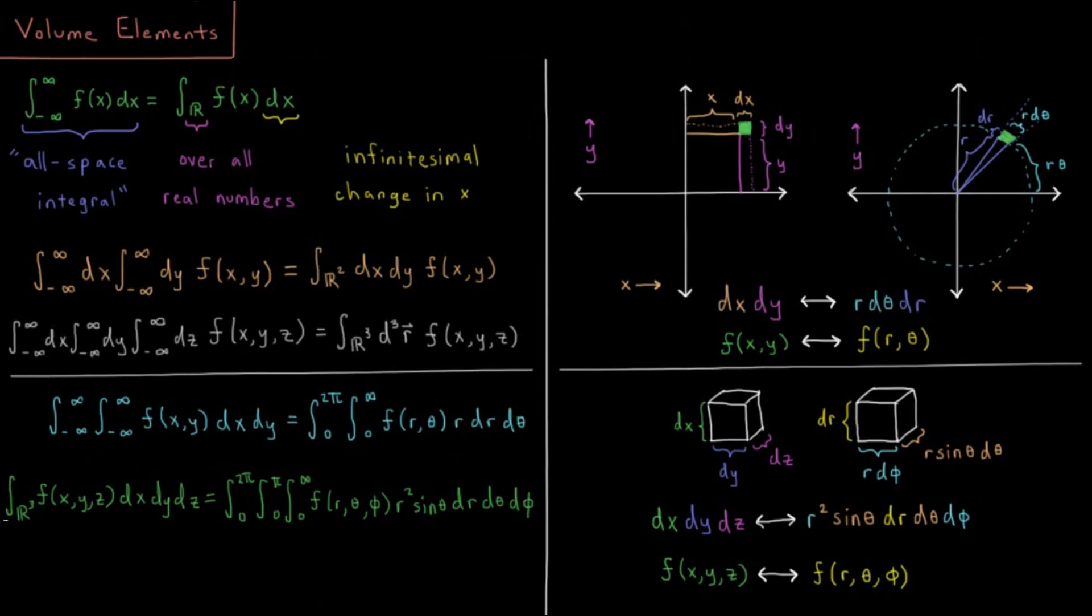Similarly, if we integrate over all space in three dimensions for a Cartesian function, that's dx dy dz, our little cubic volume element. The analog of that for our spherical polar coordinates would be 0 to 2π in φ, 0 to π in θ, and 0 to infinity in r, but the whole volume element there is r² sin θ dr dθ dφ.